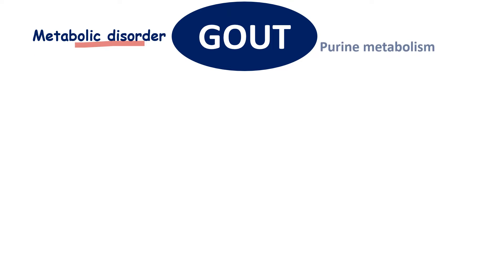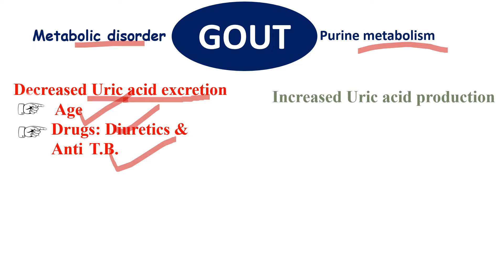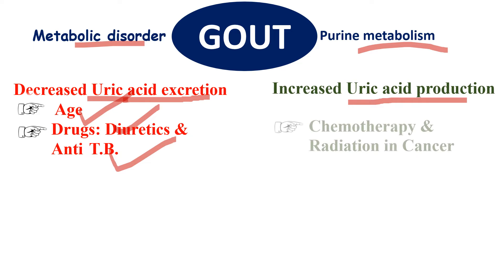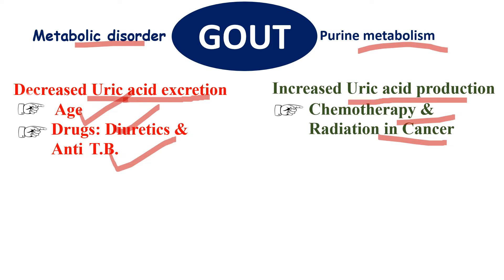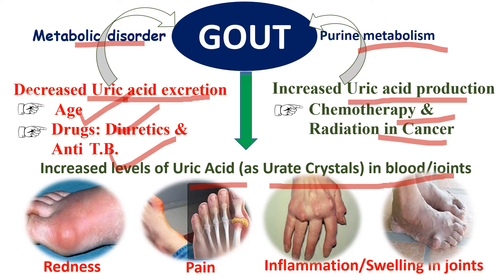Gout is a metabolic disorder related to purine metabolism. In this disease, there is decreased excretion of uric acid due to age, use of drugs like diuretics and anti-tubercular drugs. There is also increased uric acid production due to chemotherapy and radiation in cancer. Because of these two reasons, gout occurs, resulting in increased levels of uric acid in the form of uric crystals in blood and joints.